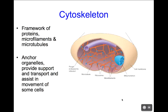Inside a prokaryotic cell, we think of the cytoplasm as a jelly-like mass with no structure — things truly float around. That's not true inside a eukaryote. Instead, there is a whole cytoskeleton providing support and movement inside the eukaryotic cell. The cytoskeleton is made largely of two different structures: microfilaments and microtubules.